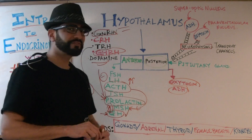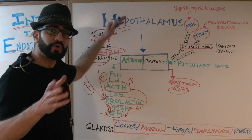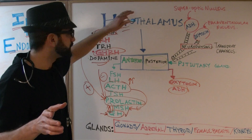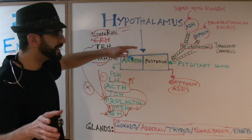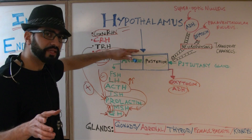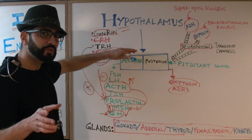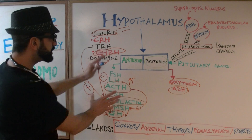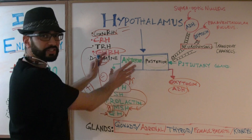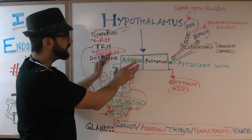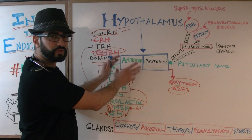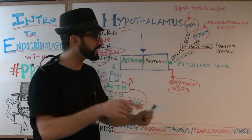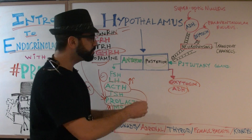Now that we've covered the anterior side, let's talk about the posterior side. An important distinction: the hormones from the hypothalamus work on the anterior pituitary gland, and those hormones are actually made in the anterior pituitary gland. The posterior pituitary gland is different.